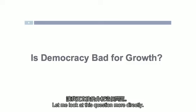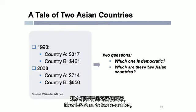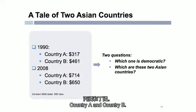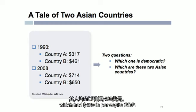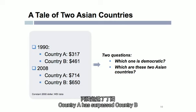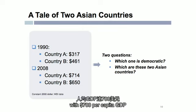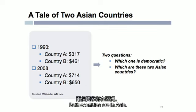Let me look at this question more directly: is democracy bad for economic growth? Let's turn to two countries, Country A and Country B. Country A in 1990 had about $300 per capita GDP, compared with Country B which had $460. By 2008, Country A had surpassed Country B with $700 per capita GDP, compared with $650 for Country B.